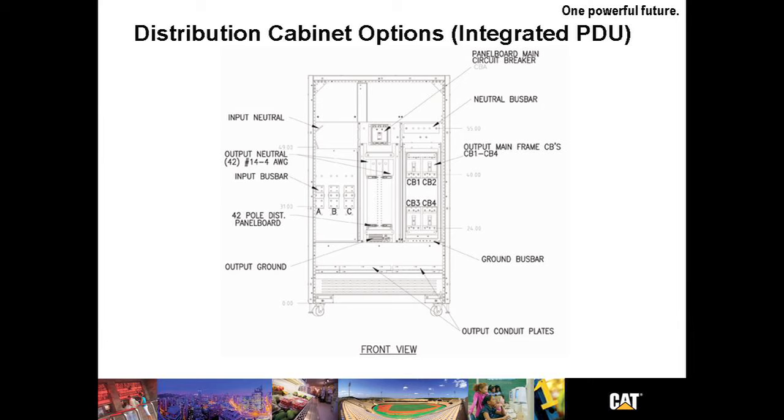For single module applications, side A and side B can be loaded with four 225 amp breakers or two 42 pole distribution panels or some combination thereof. This is an excellent differentiator when you're talking about small and mid-sized data centers.